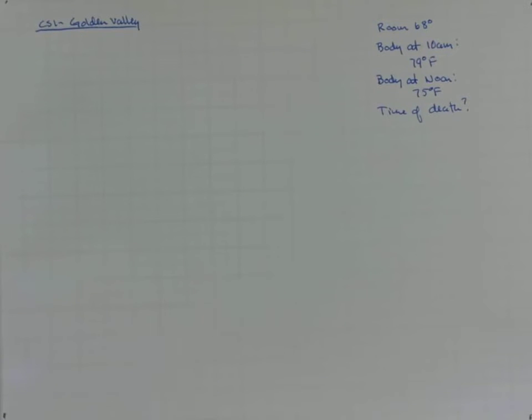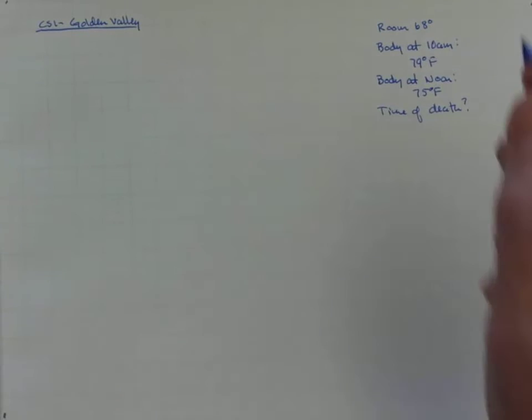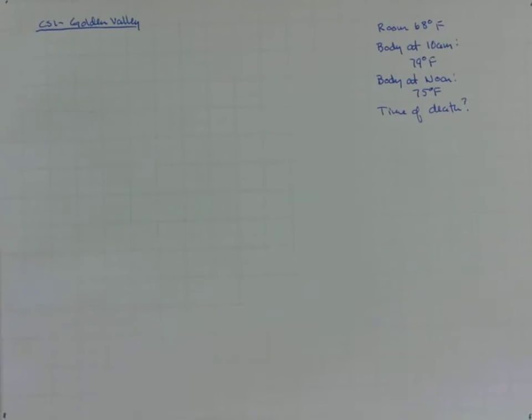Welcome to this episode of CSI Golden Valley, in which our crime scene investigators are charged with determining the time at which a murder occurred. The scene of the crime is a room in which a constant temperature has been maintained of 68 degrees Fahrenheit. Upon arriving at 10 a.m., the investigators immediately took the temperature of the body and found it to be 79 degrees Fahrenheit. They went off and had a sandwich, let the photographers do their work, then came back at noon, took the temperature again, and it was 75 degrees Fahrenheit. We wish to determine if we can, based on that information, the time of death so that we can potentially rule in or out suspects based on the time of their alibis.